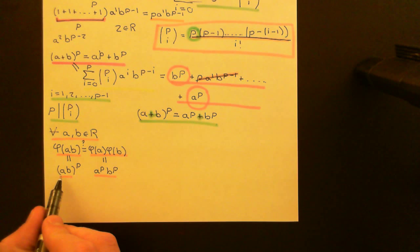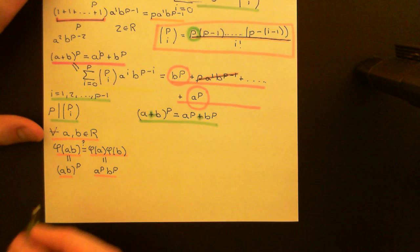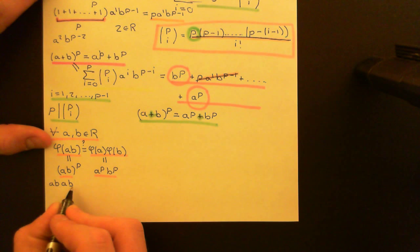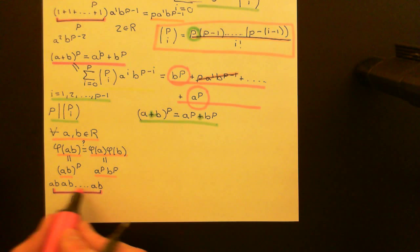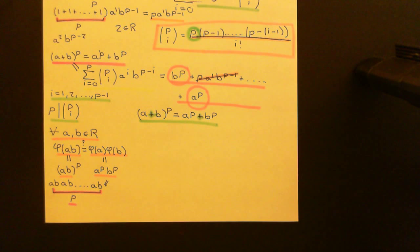Why is it the case that these two things are equal? Well, A times B to the power of P means A times B multiplied by itself P times. Because of commutativity of multiplication in our ring R, we can move all the A's together and all the B's together. So we can rewrite this as A to the power of P times B to the power of P. Multiplicative compatibility is very trivial for the Frobenius endomorphism.